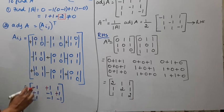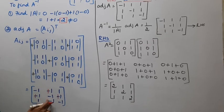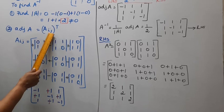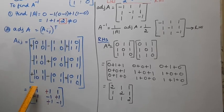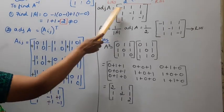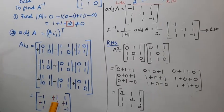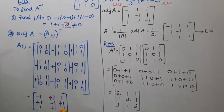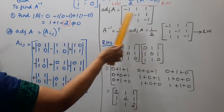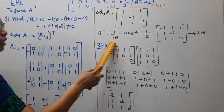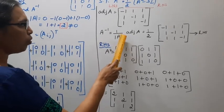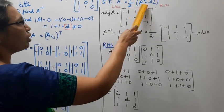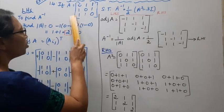After computing signs: the adjoint of A is the transpose of the cofactor matrix. A inverse = 1 by determinant of A into adjoint of A. Now moving to the right hand side: 1 by 2 into (A squared minus 3I). A squared is computed as [0,1,1; 1,0,1; 1,1,0] multiplied by itself.